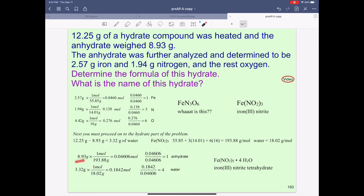So taking the anhydrate, turn it into moles. Taking the water mass value, turn that into moles. And again divide by the smaller, which is the anhydrate and usually will always be that. And so we end up with this 1 to 4 ratio, giving us the iron(III) nitrite tetrahydrate.